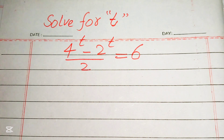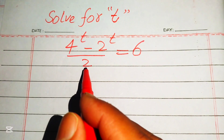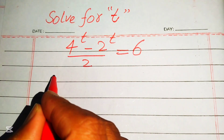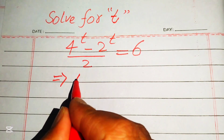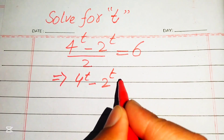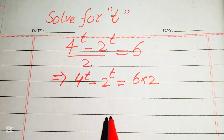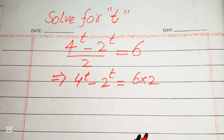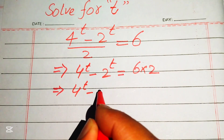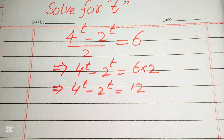First, we rewrite this equation. The 2 in the denominator moves to the right-hand side as a multiplier, so it is written as 4 to the power of t minus 2 to the power of t equals 6 multiplied by 2, which gives us 4 to the power of t minus 2 to the power of t equals 12.